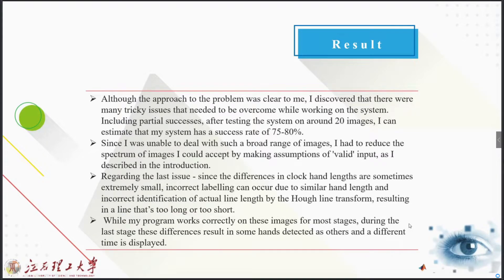Now let's talk about part three, which are the results of this project. Although the approach of the problem was very clear to me, I discovered that there were many tricky issues that needed to be overcome while working on the system, including partial successes. After testing the system on around 20 images, I can estimate that my system has a success rate of 75 to 80 percent. Since I was unable to deal with such a broad range of images, I had to reduce the spectrum of images I could accept by making assumptions of valid input.